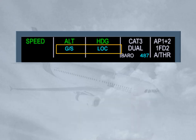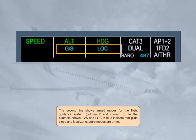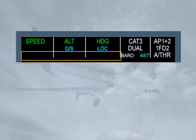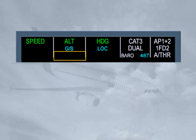The second line shows armed modes for the flight guidance system. In the example shown, GS and LOC in blue indicate that glide slope and localizer capture modes are armed. The third line shows reminders or messages and can be spread over one column or two columns. In our example, column 2 and column 3 are used for a special message which advises us to check the consistency of the selected approach. Note: for more details, refer to your FCOM.